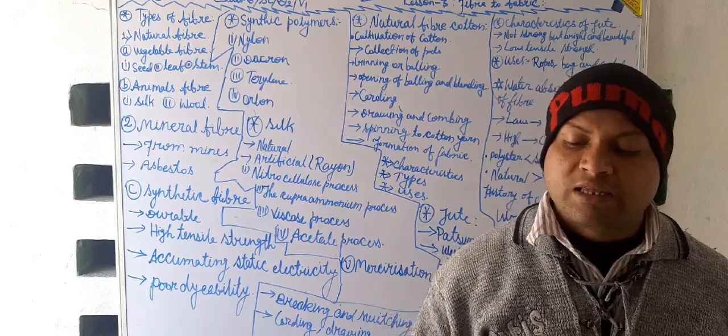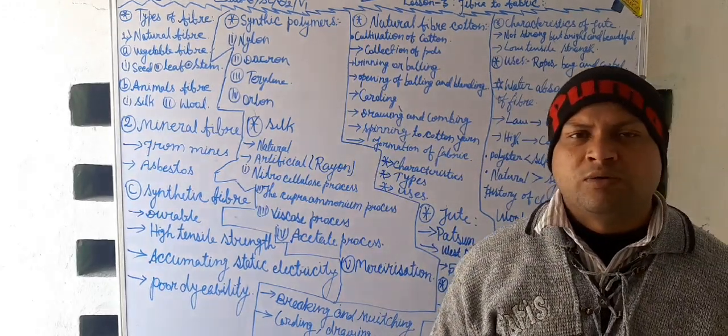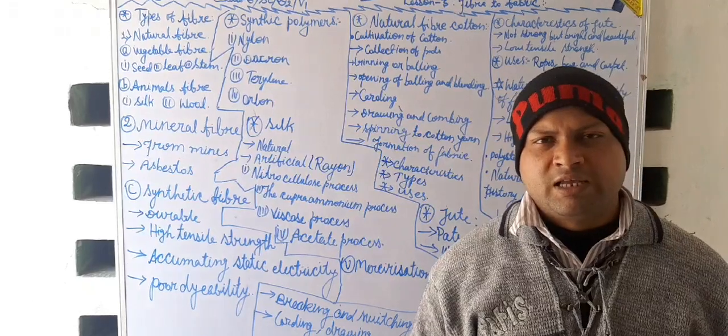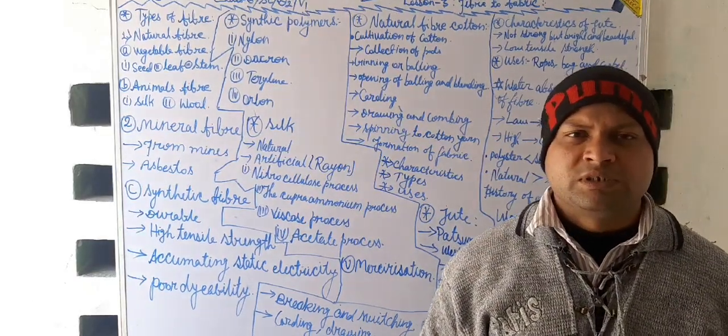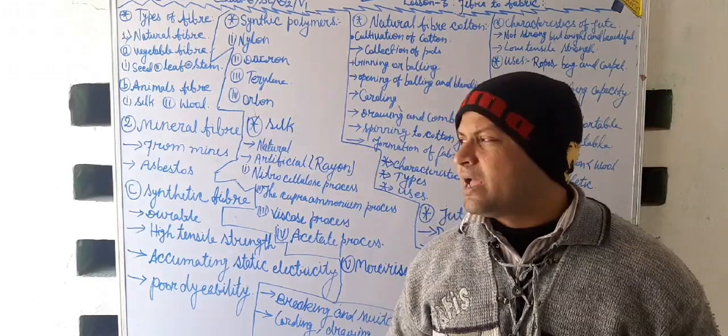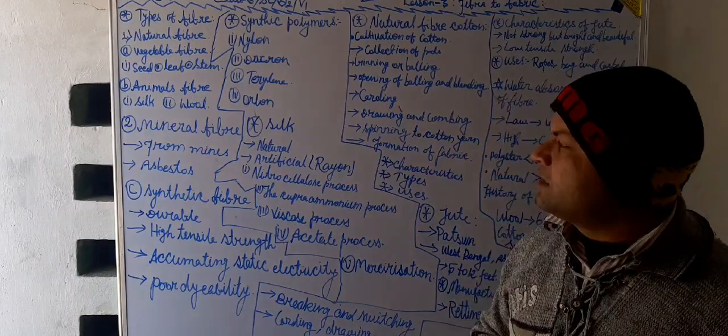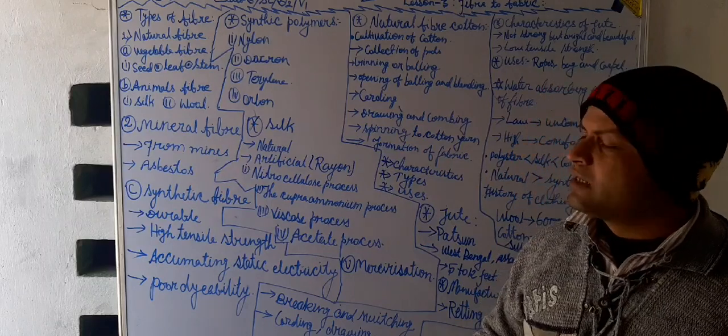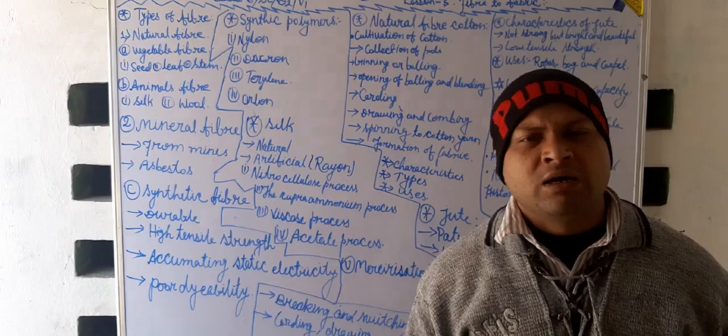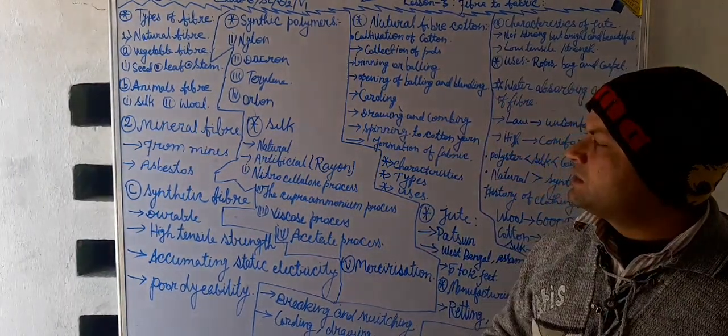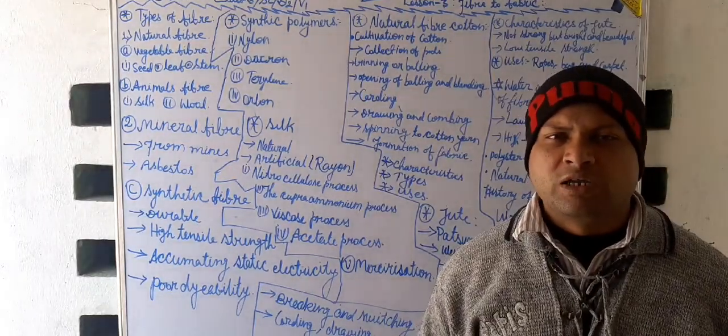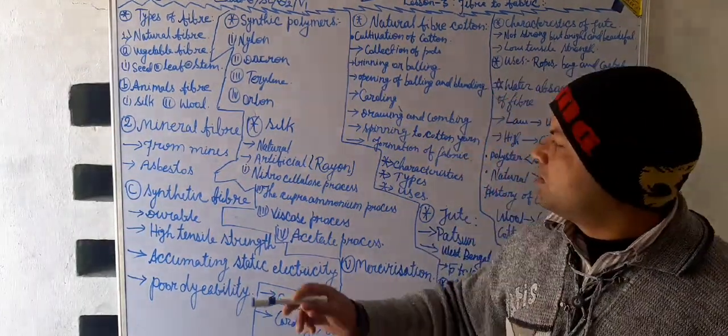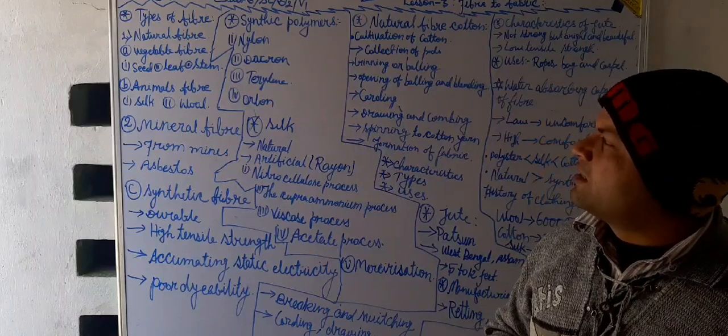Second, another type of fibers, that is mineral fiber. Mineral fiber is obtained from the mines. The good example of minerals fiber are asbestos. So, these are the minerals fibers and natural fibers.